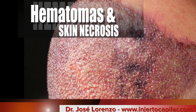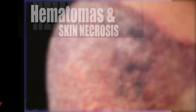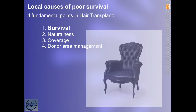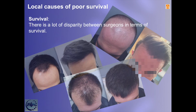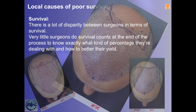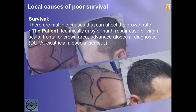The four pillars on which a good hair transplant is based, in order of importance, are: survival, naturalness, coverage, and good donor area care. Without survival there is no transplant. There is a lot of disparity between surgeons in terms of survival. Very few surgeons do survival counts at the end of the process to know exactly what percentage they're dealing with and how to improve their yield. Controlling survival is a difficult task.